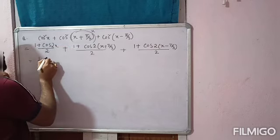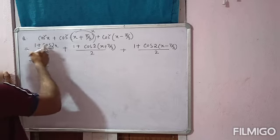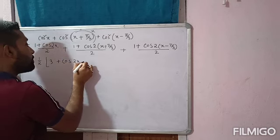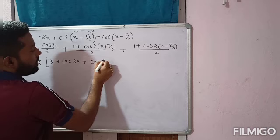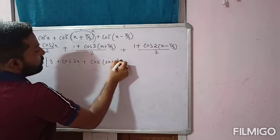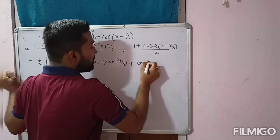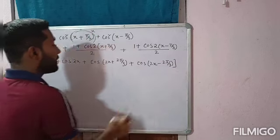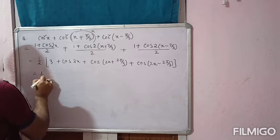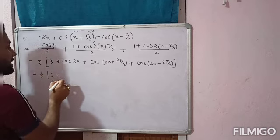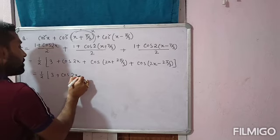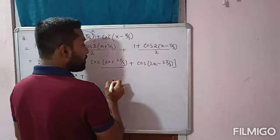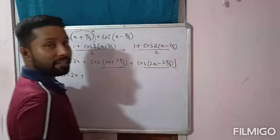Now I can take 1/2 as a common factor. If I take 1/2 common, then this will be: (1/2) × [3 + cos 2x + cos(2x + 2π/3) + cos(2x − 2π/3)].